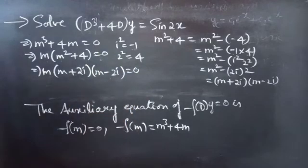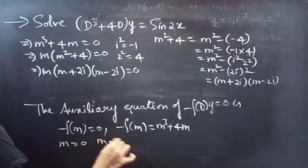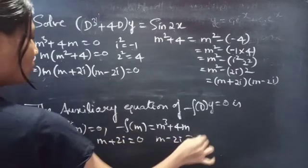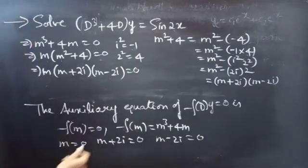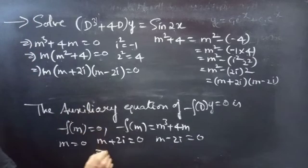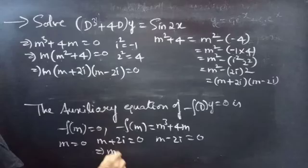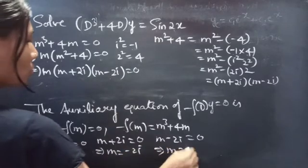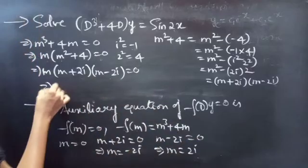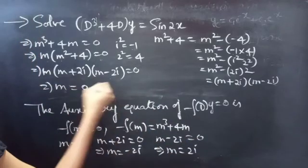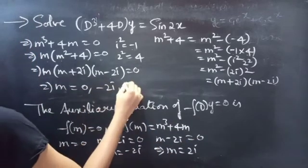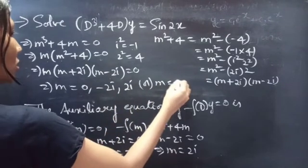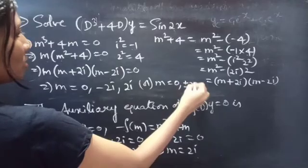The auxiliary equation becomes m(m + 2i)(m − 2i) = 0. Equating each factor to zero: m = 0, m + 2i = 0 gives m = −2i, and m − 2i = 0 gives m = 2i. So the three roots are m = 0 and m = ±2i.